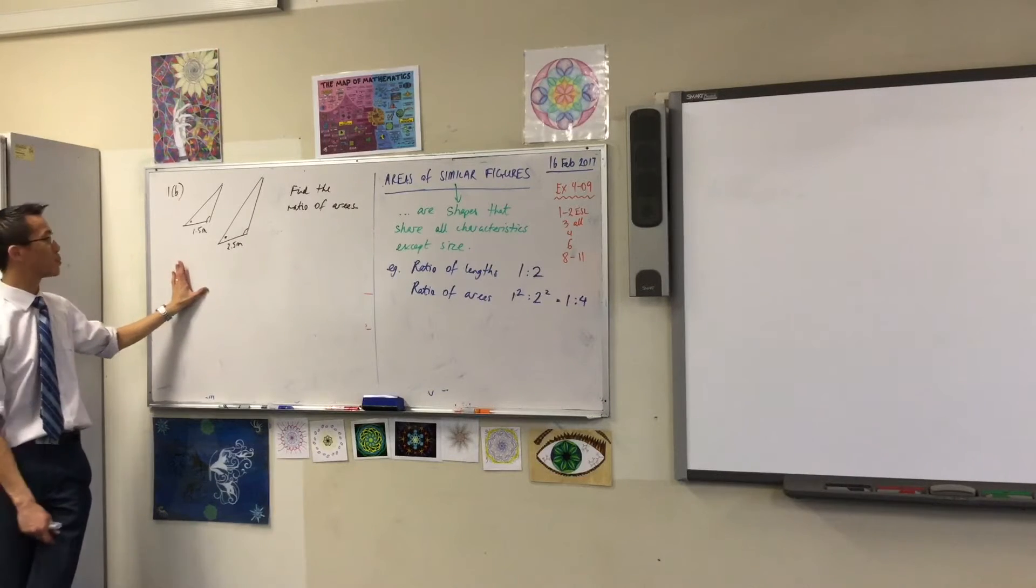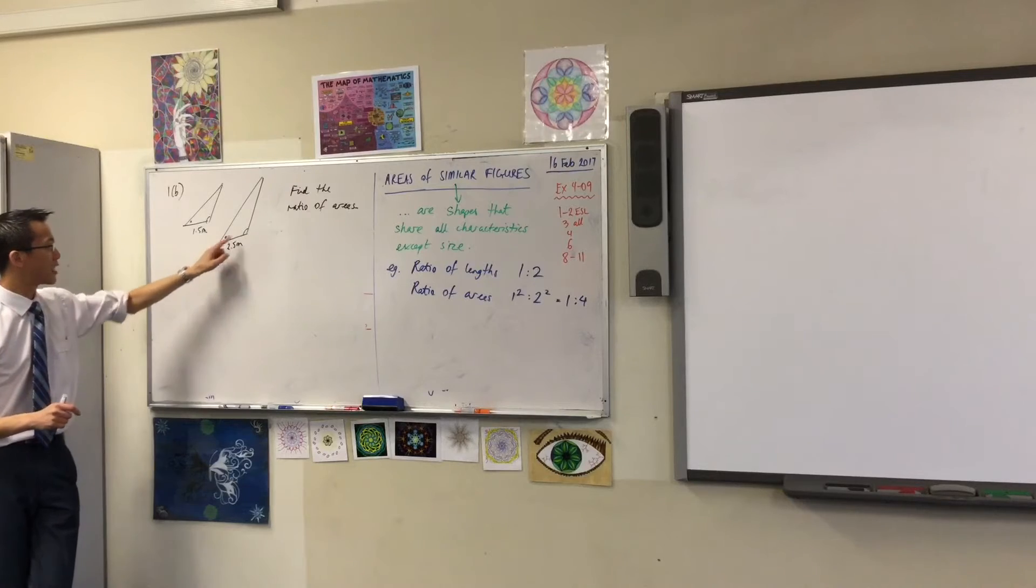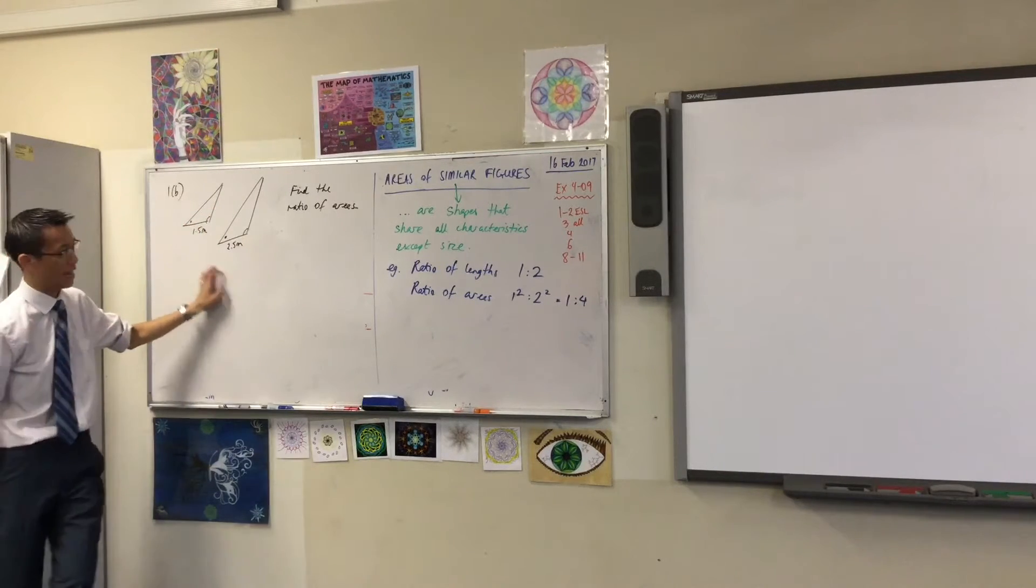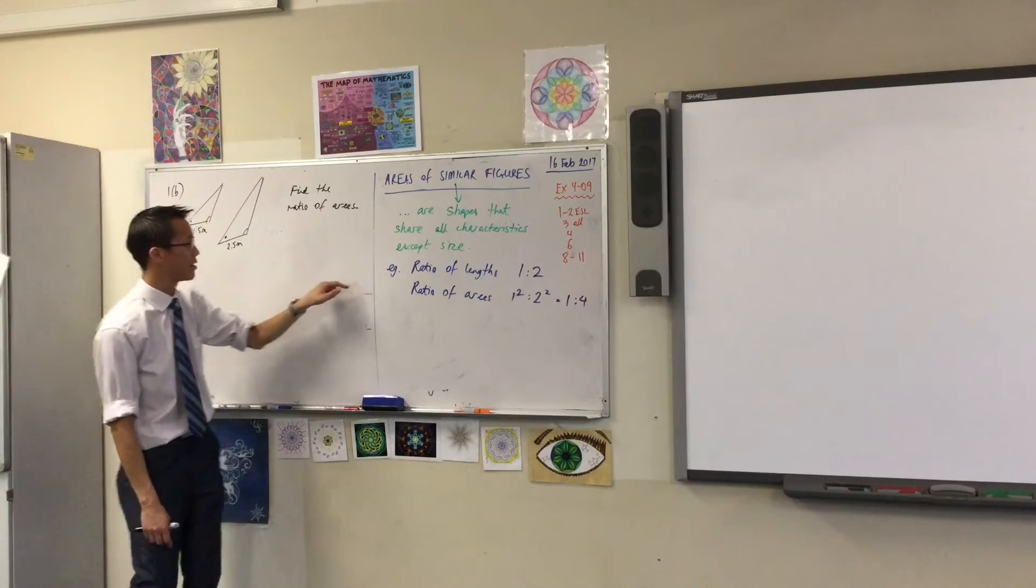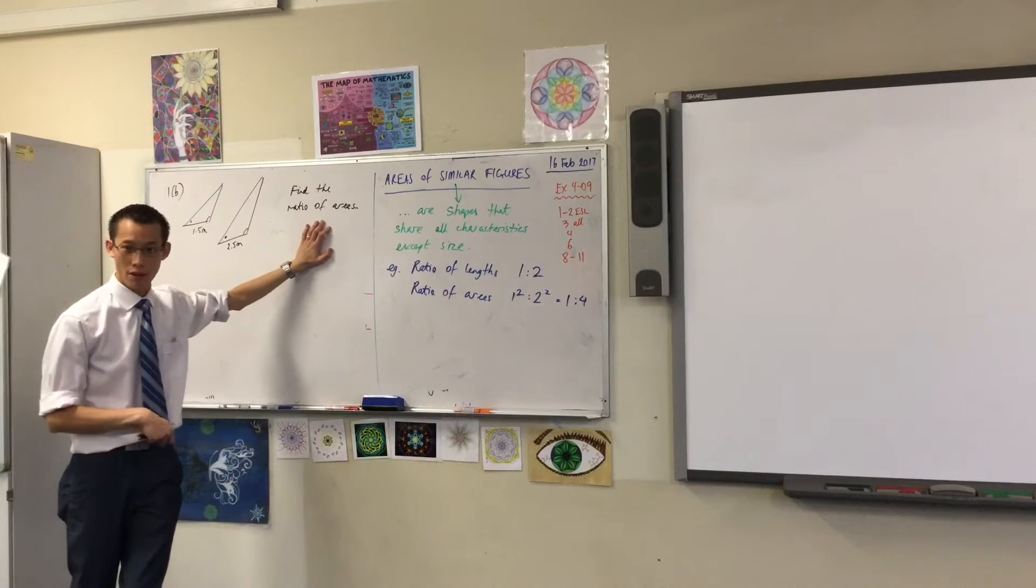The question presents to you this pair of triangles. It says they're similar. It's given us these angles here so we know, and you can see the shape is the same, all characteristics except the size. And then you have these lengths here. This is what they want. What's the ratio of areas?